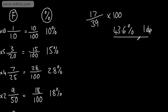When you're doing these, check and think: is that a reasonable answer? It's just slightly less than a half — if I doubled 17, I'd get 34, and 17 out of 34 would be 50%. So 43.6% looks pretty good.